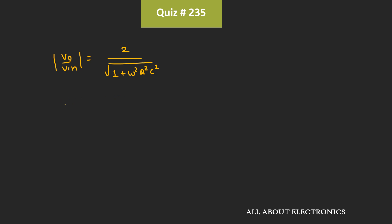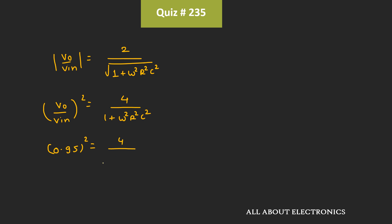Taking the square on both sides: (Vout/Vin)² = 4 / (1 + ω²R²C²). We need to find the frequency f such that the magnitude of the output waveform is 95% of the input waveform. That means Vout/Vin = 0.95, so 0.95² = 4 / (1 + ω²R²C²), which gives 1 + ω²R²C² = 4.432.